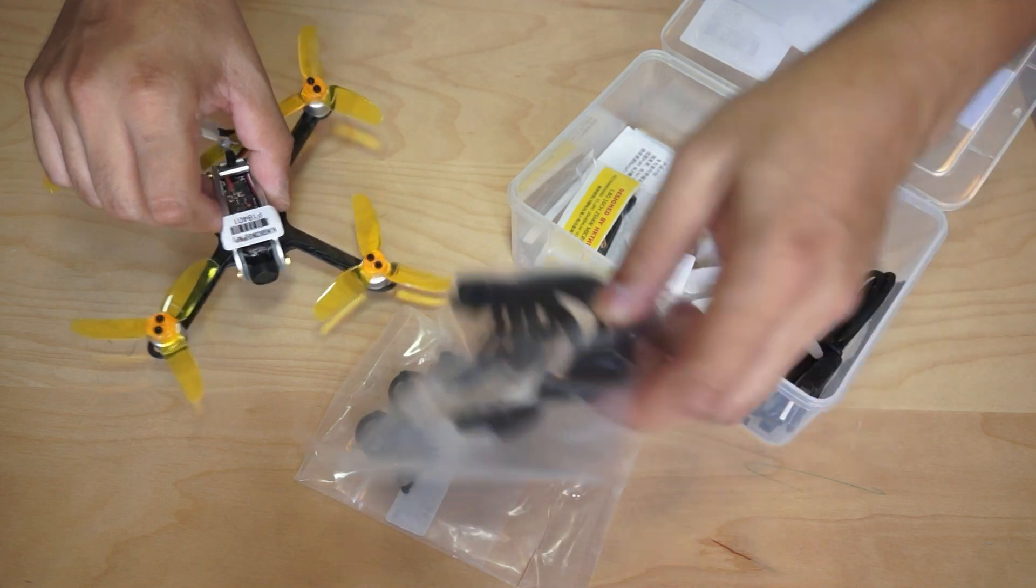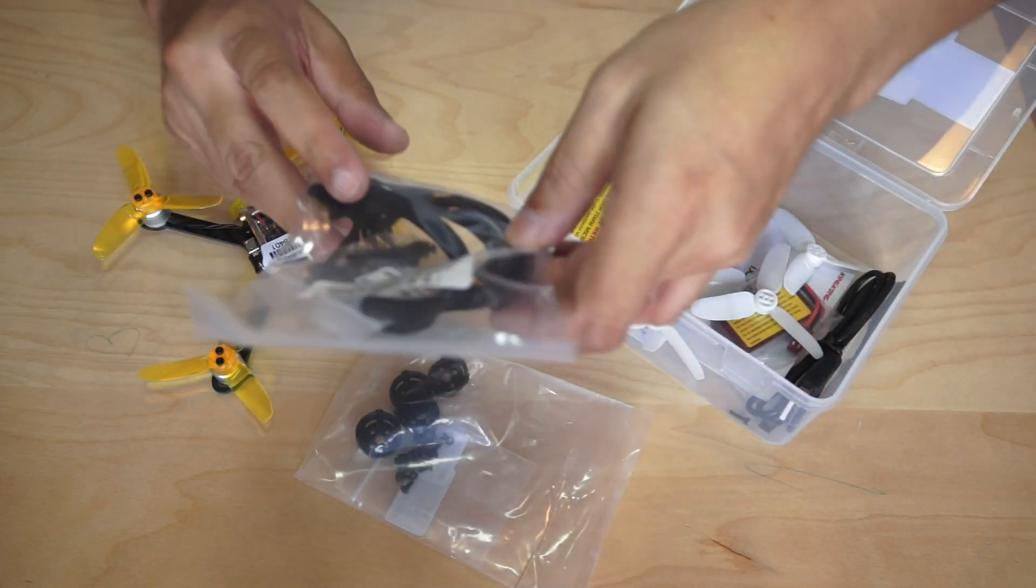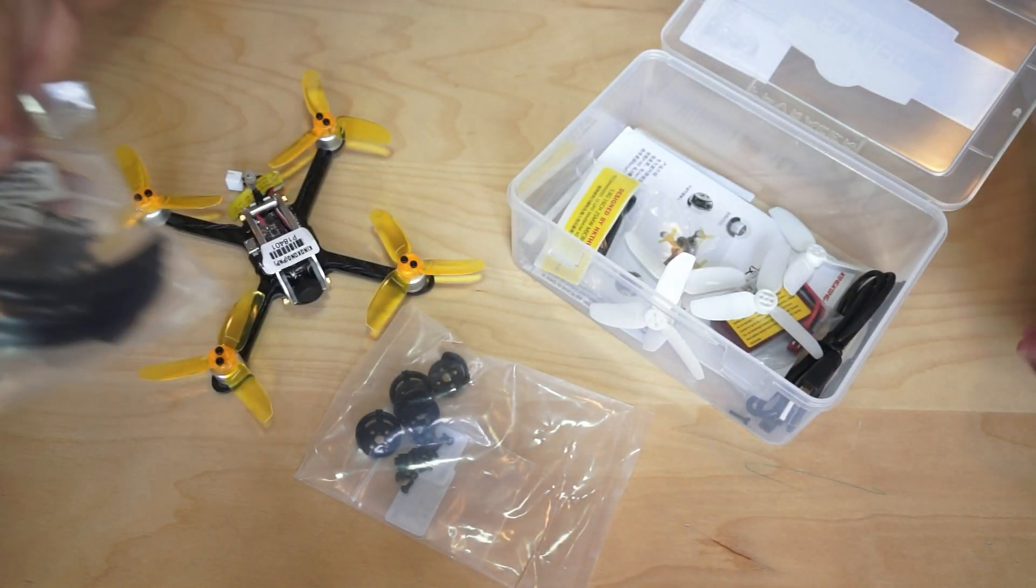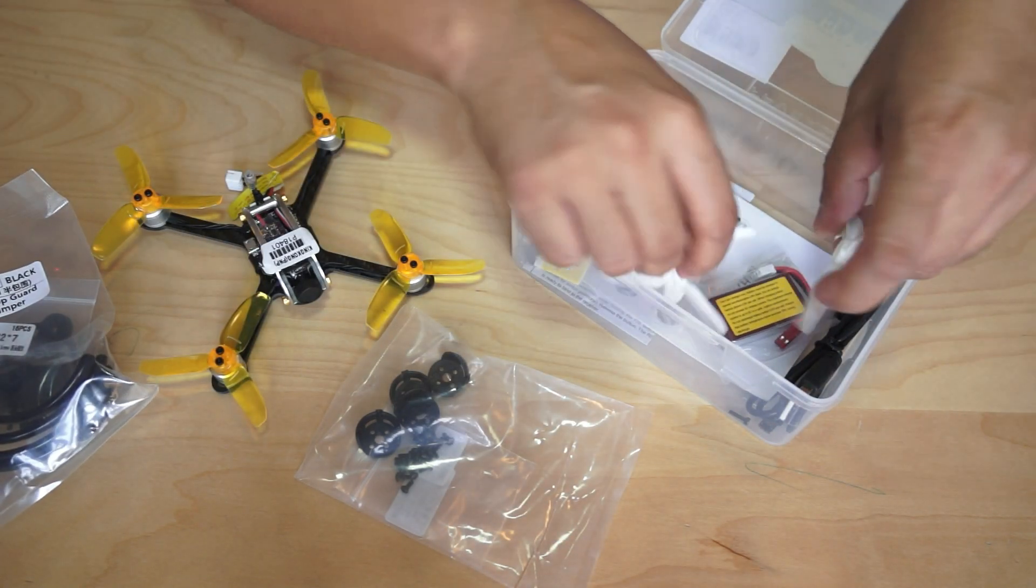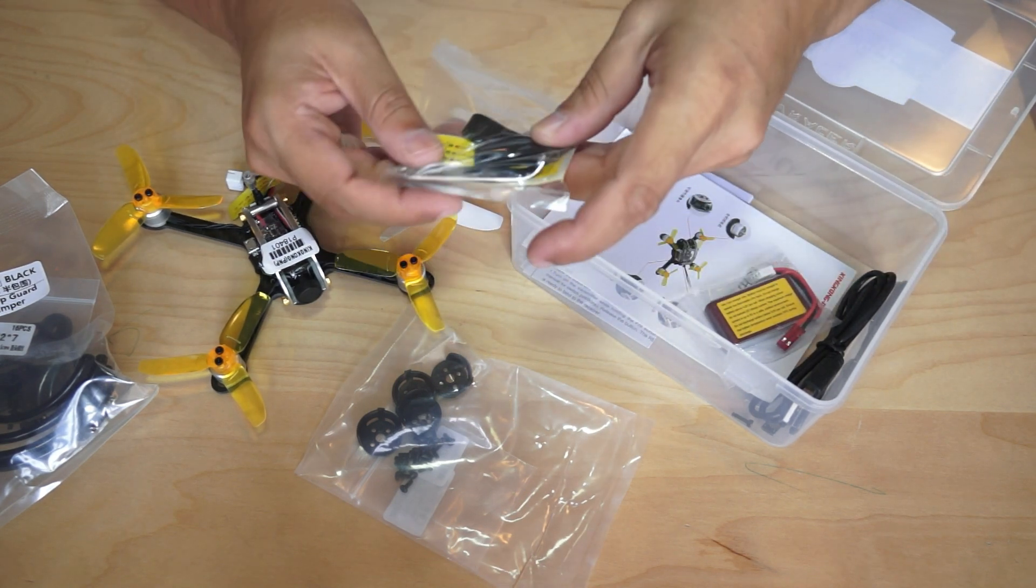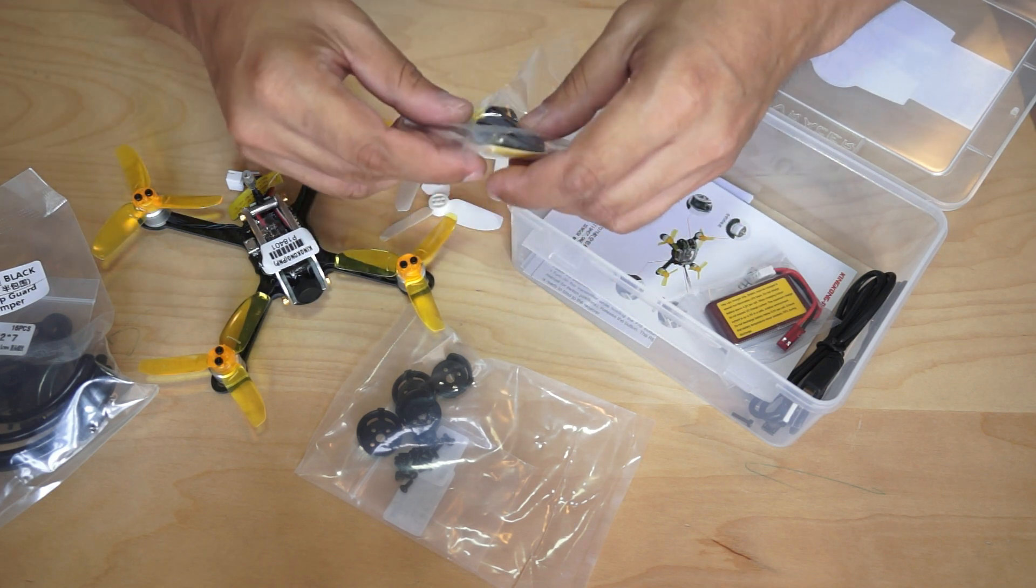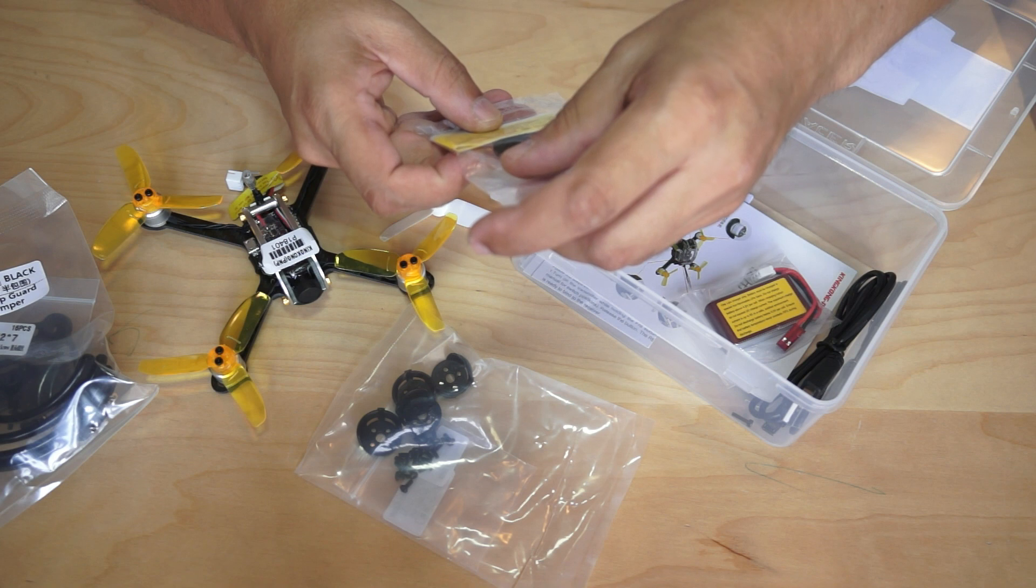But the quadcopter is already this big, installing the propeller guards will make it even bigger and you won't be able to do some small gates FPV racing gates. Anyway, then we have one more set of propellers which is white as I mentioned, and then we have two rubber bands, propeller tool for you to remove the propellers. Sometimes these propellers can really get stuck very hard.